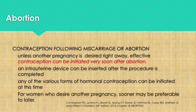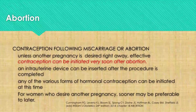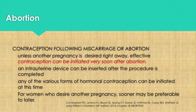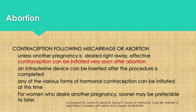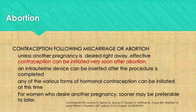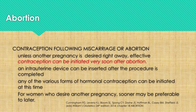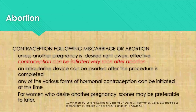Can we give contraception following miscarriage or abortion? Yes. Unless another pregnancy is desired right away, effective contraception can be initiated as soon as possible after evacuating the products of conception. In fact, we can insert an IUD or intrauterine device after the procedure is completed. Any of the various forms of hormonal contraception can be initiated right after evacuation. For women who desire another pregnancy, sooner may be preferable to later.